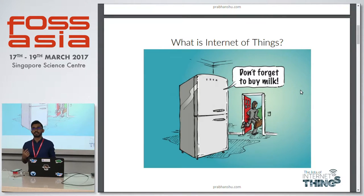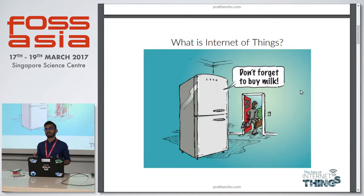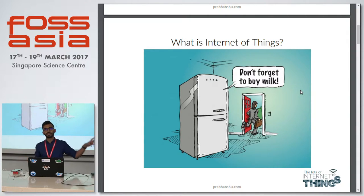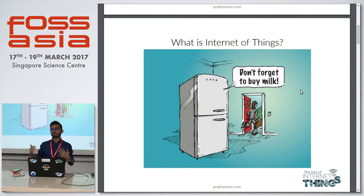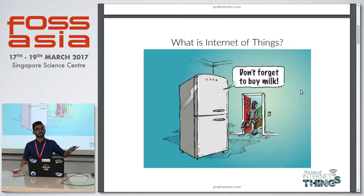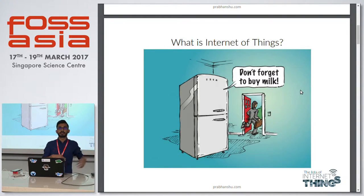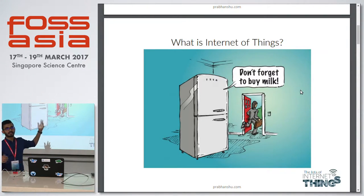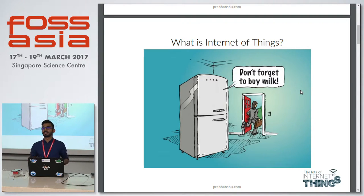It started in 1982 when at CMU some people connected a Coke vending machine to the Internet and they could see the inventory of that machine. Then in 2012 and 2016 the process just escalated — everything started getting connected because analytics came in, big data came in and new things came up. For example, you can get your fridge connected and it can tell you that you need milk.